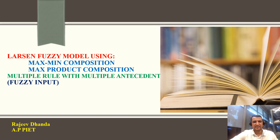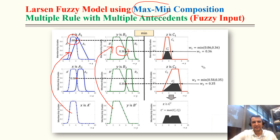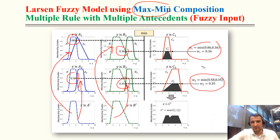For multiple rules with multiple antecedents with fuzzy input: superimposing gives degree of compatibility 0.86 for the first antecedent and 0.36 for the second. Taking the minimum for max-mean: 0.36. For the second rule, superimposing gives 0.58 and 0.35; the minimum is 0.35.